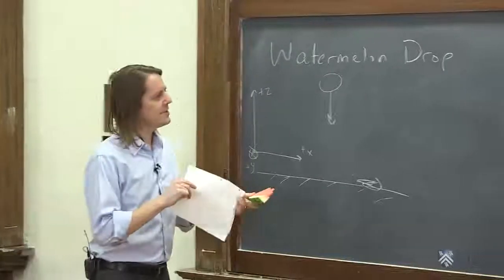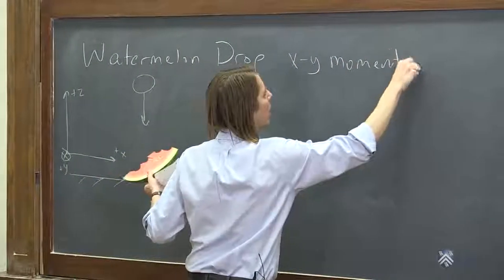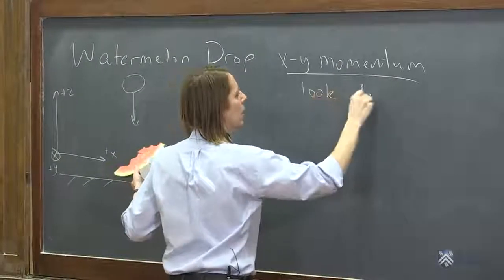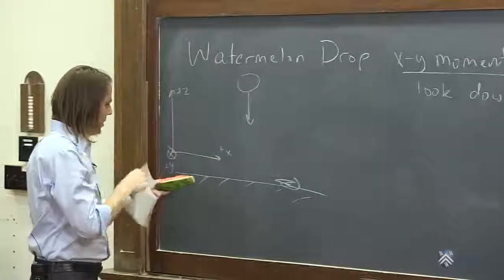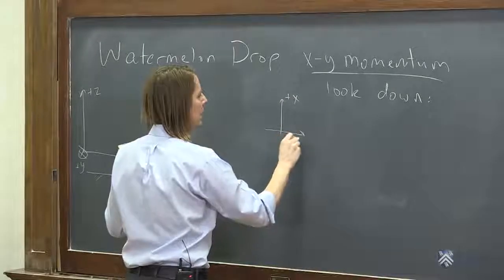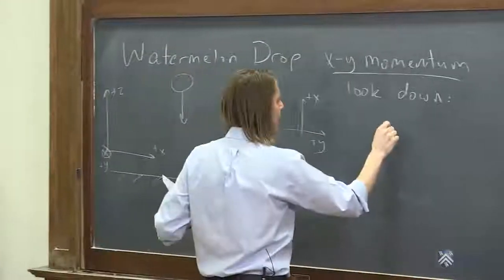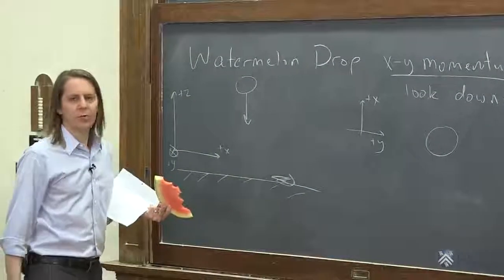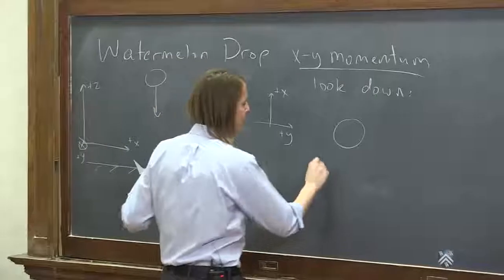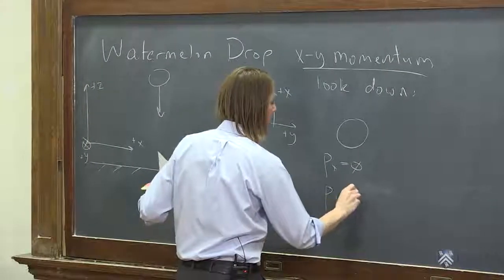Well, let's see. So first let's think about the x, y momentum. Let's look down. So we're going to look down this way. So now here's x and there's y. It's a watermelon and it's falling and it has no velocity in the x and it has no velocity in the y. Therefore, it has no momentum in the x. P_x equals zero. P_y equals zero.